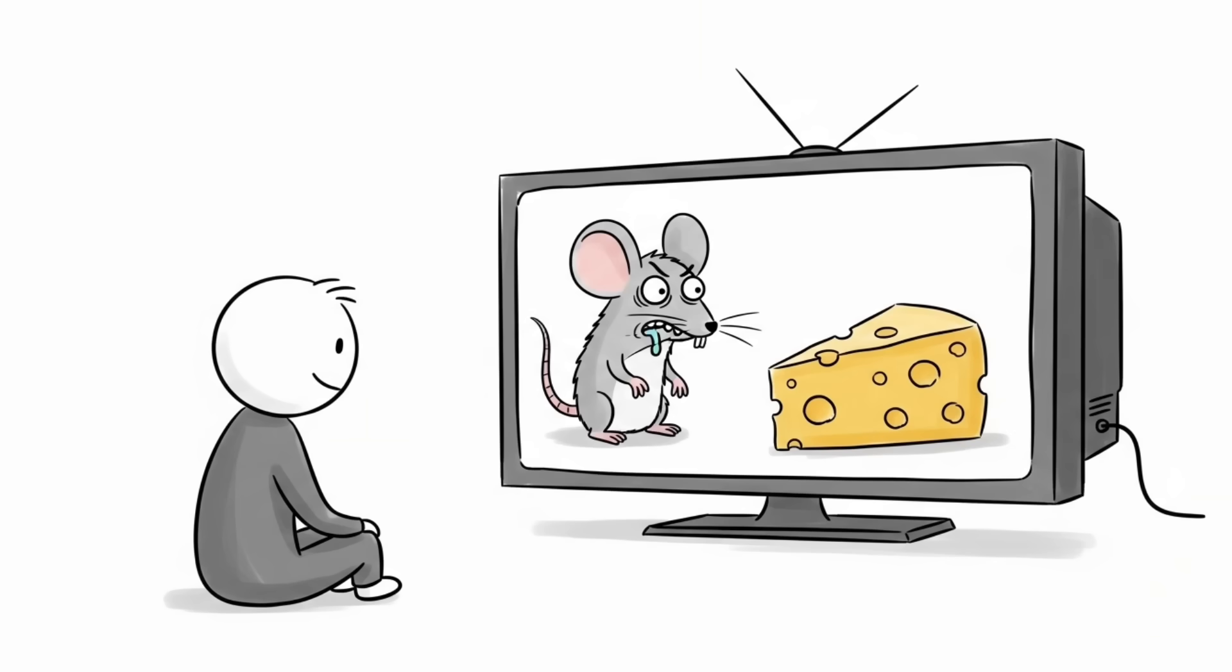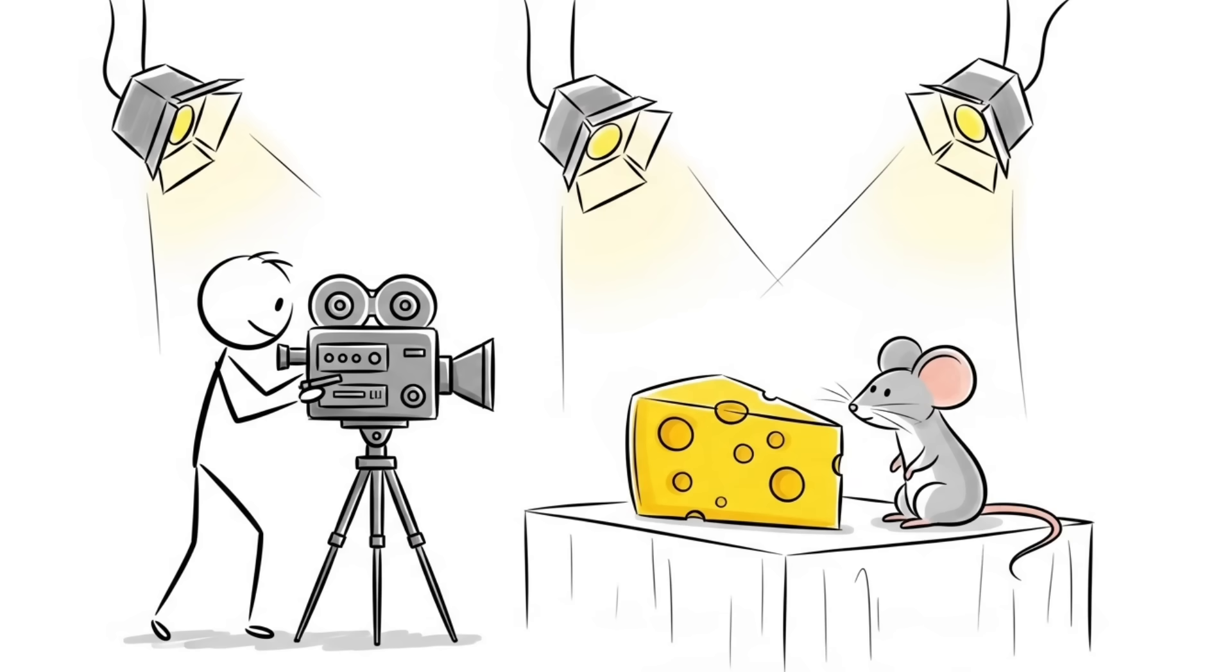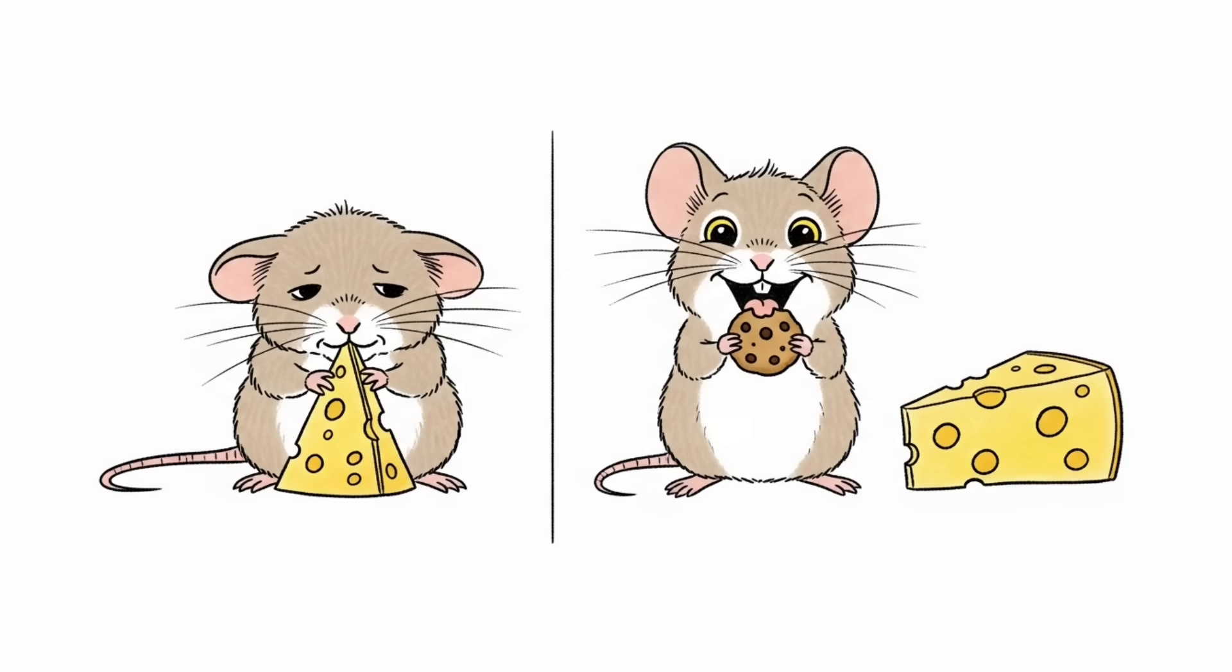Number 2. The great cheese lie. Every cartoon you've ever watched shows a mouse drooling over a giant block of Swiss cheese. That's Hollywood nonsense and completely false. While a mouse will eat cheese if it's the only thing available, they prefer sweets and sugary foods.